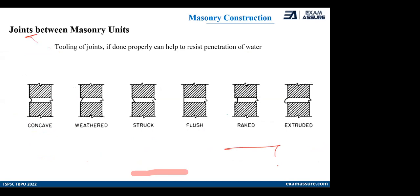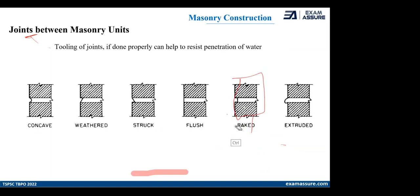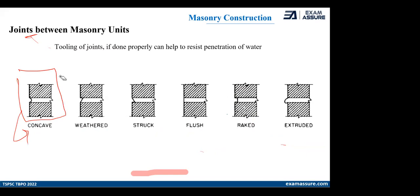Now these joints are important. When bricks are created one upon another, there is a possibility that water can seep inside and it can deteriorate your structures. For this protection, these joints are created. Many times these joints are asked — the shape of the joint will be given and it is asked: is it raked, is it extruded, is it struck, is it weather? So it is important you remember the shape and the name. You have to memorize this — there is no other option — the shape and the name related to it.